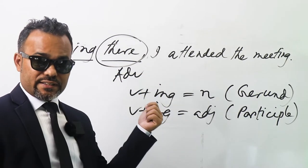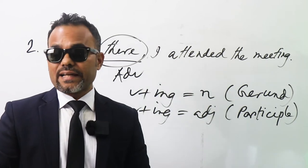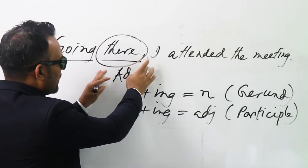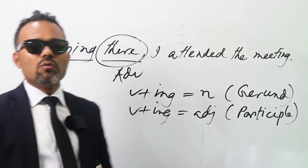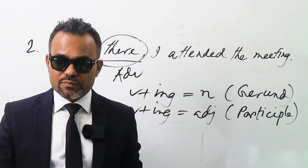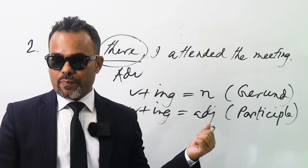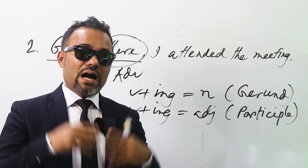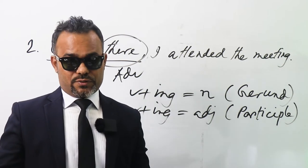Here in this sentence, 'there' is an adverb. So what can an adverb modify? A noun? No — definitely a verb. So this is participle, because the -ing form can act as a verb too.